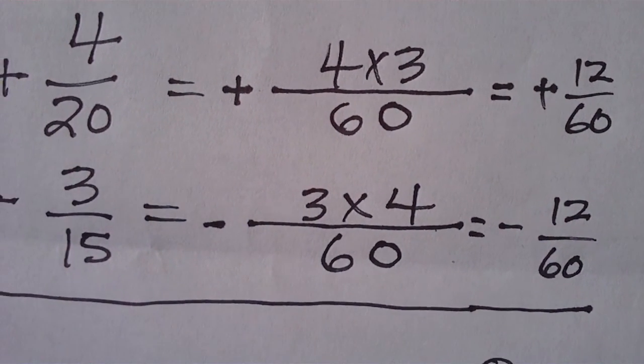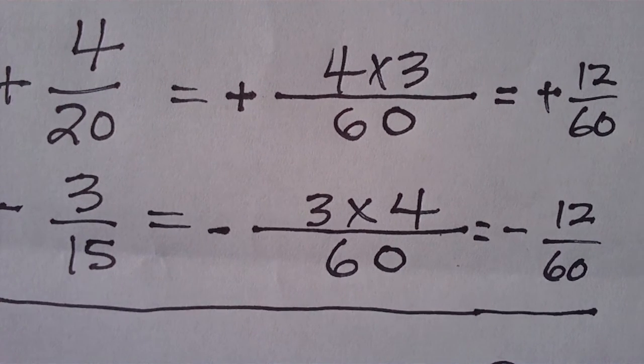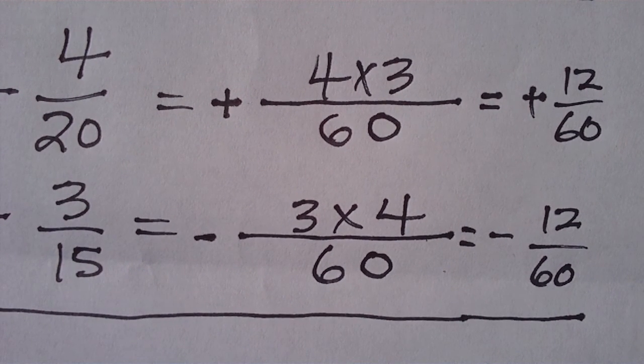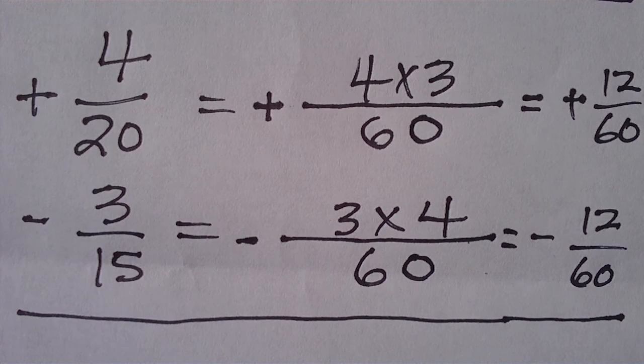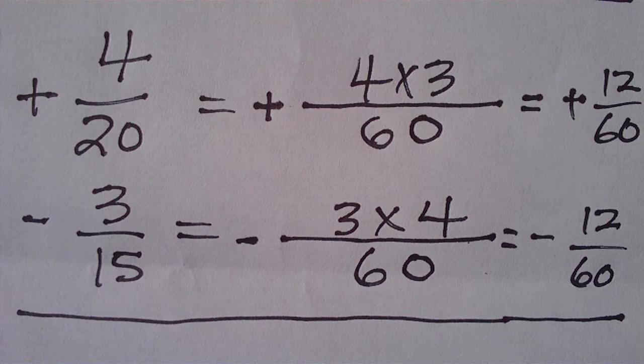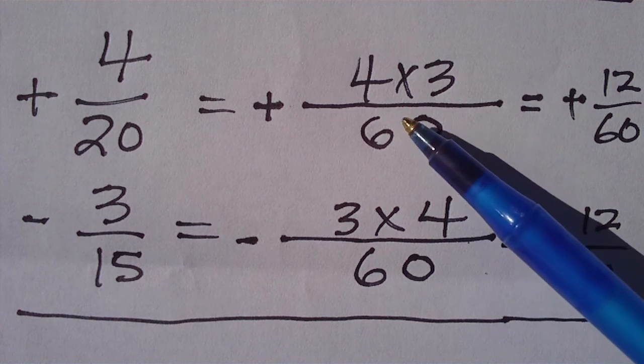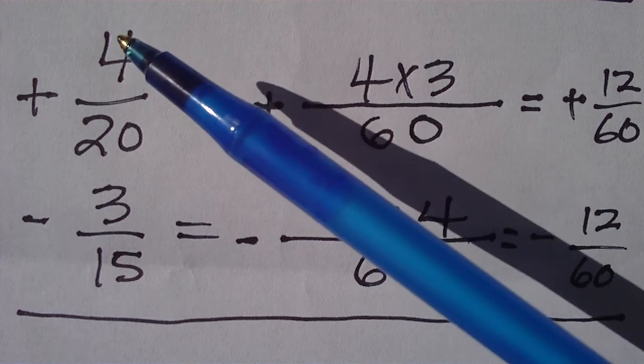Back over here, we have four twentieths minus three fifteenths again. So, our LCD is sixty. On the top here, we go twenty into sixty times four.